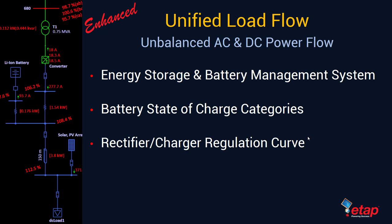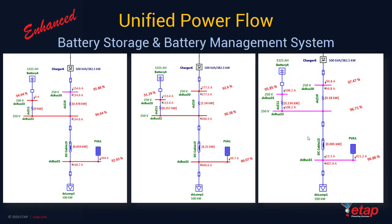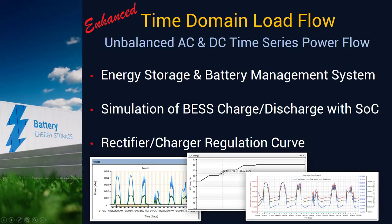DC short circuit has been enhanced to include contribution based on state of charge of the batteries. The unified load flow module includes unified unbalanced AC and DC power flow simulation, including energy storage and battery management system, battery state of charge categories, and rectifier or charger regulation curve. The rectifier or charger inside ETAP can be used for charging and discharging the battery, allowing bi-directional power flow. For unified power flow, you can simulate under-voltage conditions where the battery supplies supporting current and power into the network, or over-voltage conditions where the battery absorbs power away from the network.